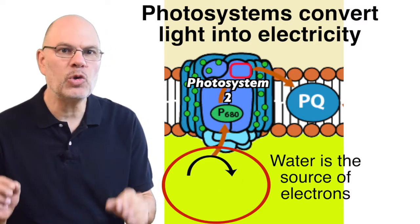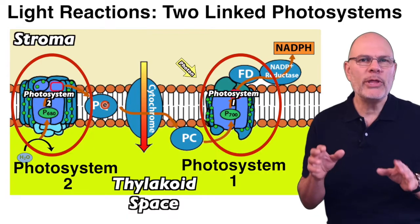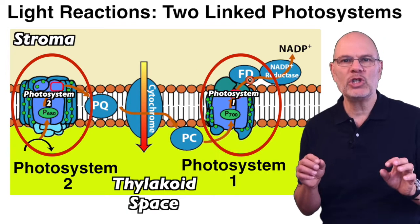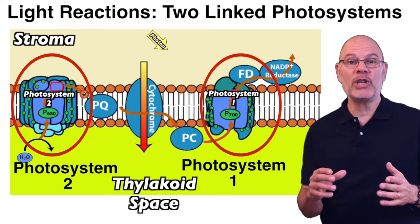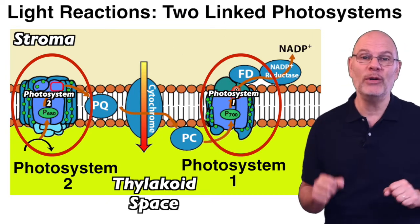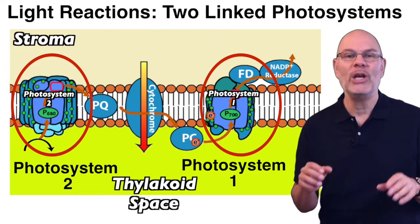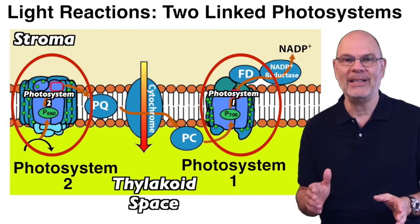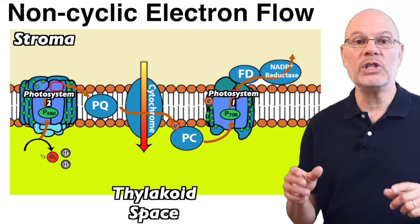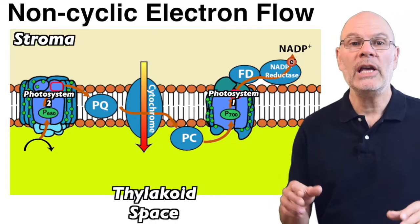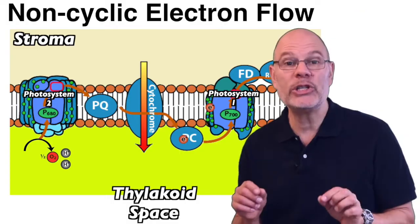As we'll see, the source of the electrons is water. Note that there are two photosystems sequentially linked together. They were numbered in order of their discovery, so photosystem 2 unfortunately comes first, followed by photosystem 1. The pathway by which electrons flow from photosystem 2 to photosystem 1 is called non-cyclic electron flow.